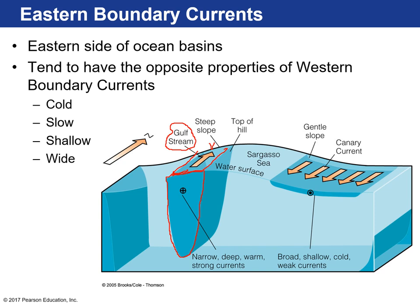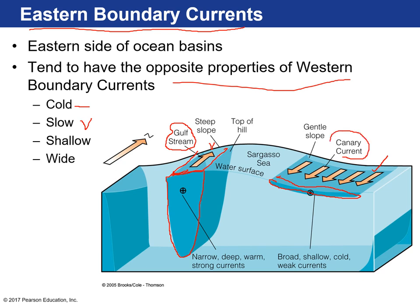On the eastern side of an ocean basin, we have eastern boundary currents — the opposite properties of western boundary currents. They're very cold because their water originates from higher latitudes. They're very slow — very low velocity — and very shallow and very wide. Here's an eastern boundary current; the slope is very gradual compared to the other side. The Canary Current, off the coast of Spain and Portugal, moves southward in the North Atlantic — very slow-moving, broad, shallow, cold, and weak.